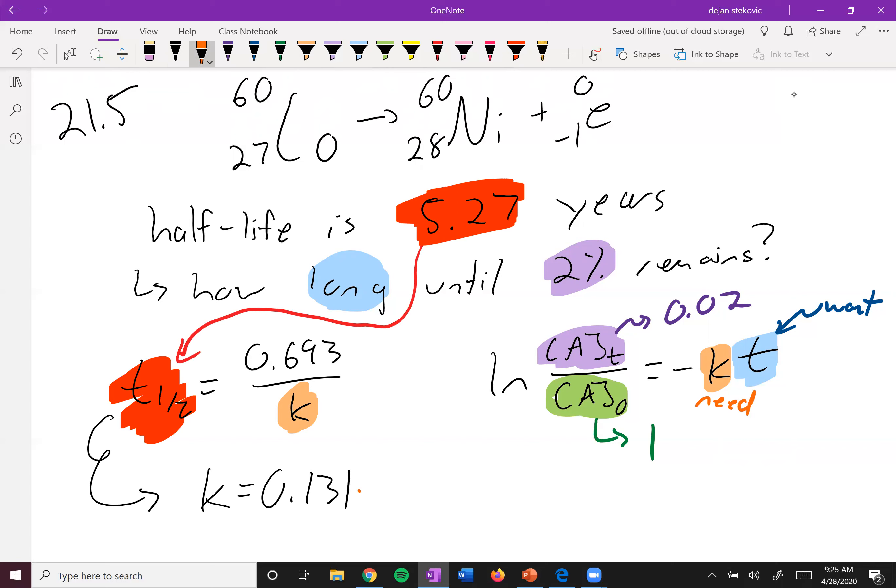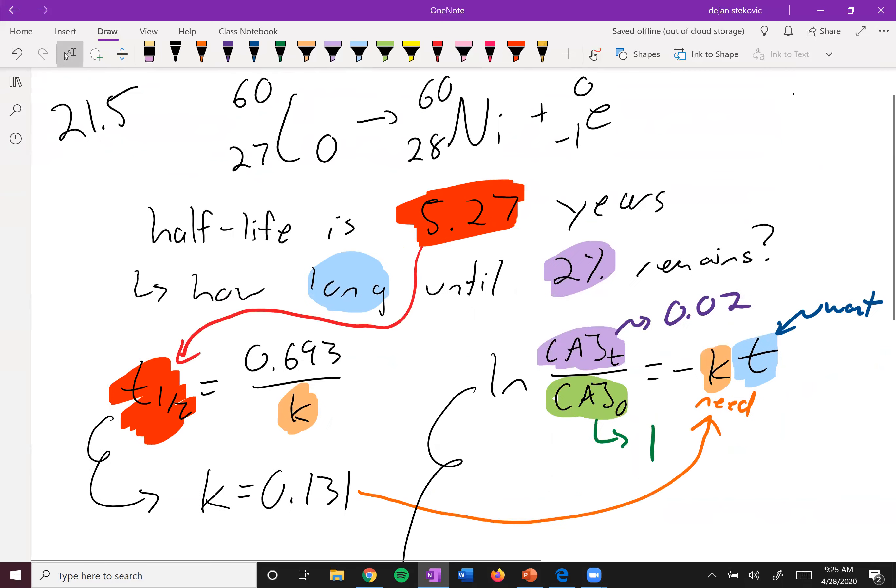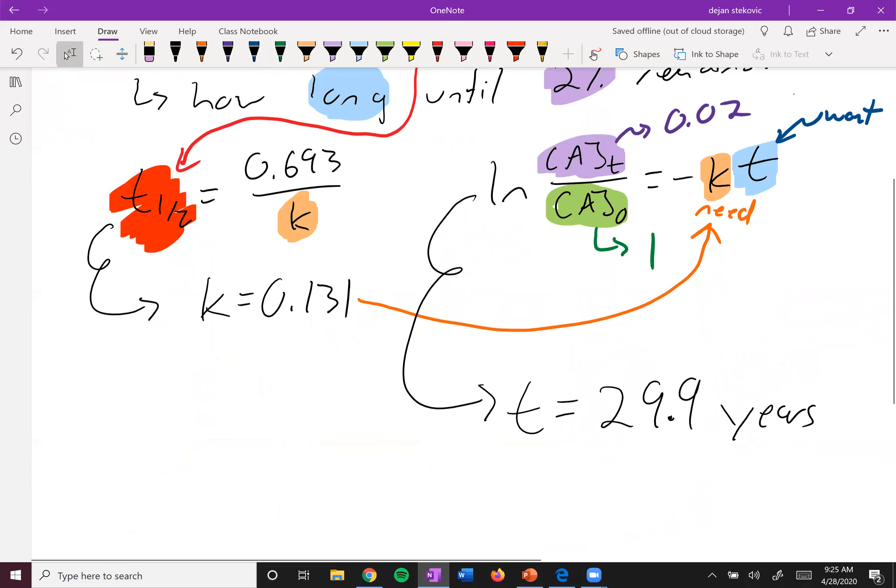Take this k, plug it in, and solve for t. You get 29.9 years. So how long until 2% remains? It will take 29.9 years.